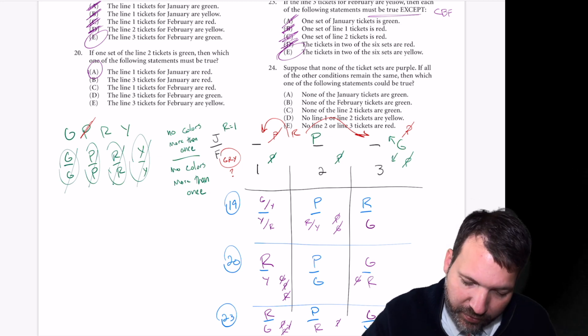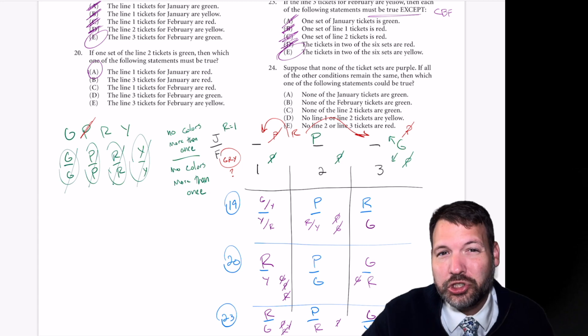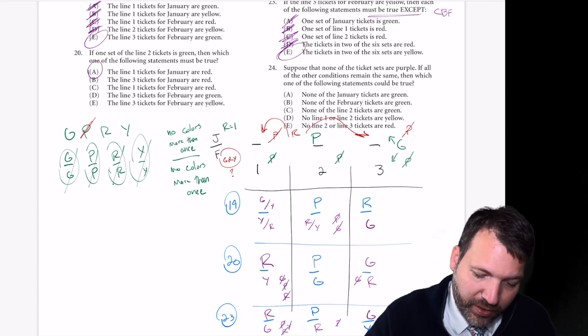24. Suppose that none of the tickets are purple. Okay, so this is changing the rules. We're going to save this for later.